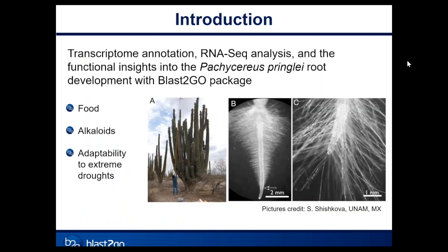In this presentation, you'll hear about root development of a large Mexican cactus species — Pachycereus pringlei. The fruit of this cactus is an important food for some tribes and the plant flesh contains alkaloids. This species, along with many other Cactaceous species, is very well adapted to severe droughts. We wanted to understand the molecular mechanisms of this adaptability, so my colleagues and I studied primary root development of this species. The lead investigator is Svetlana Shishkova at the Institute of Biotechnology at UNAM in Mexico. You can see here an actual specimen, fruit collection, and the root tips before and after differentiation.